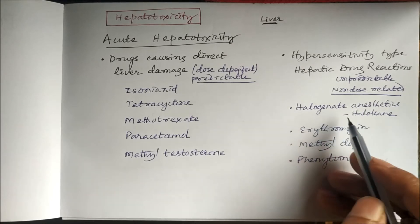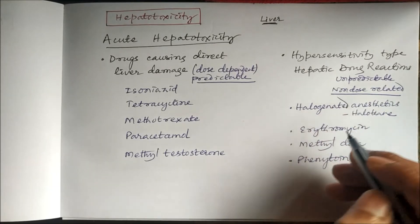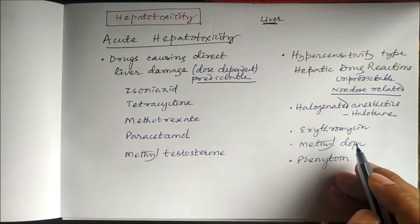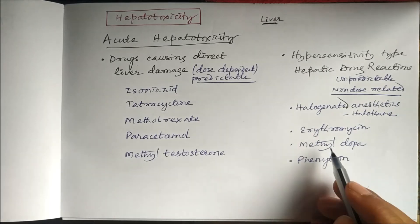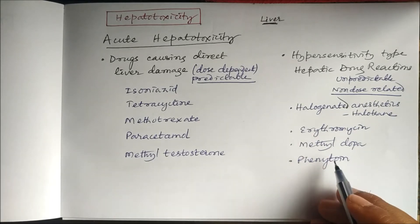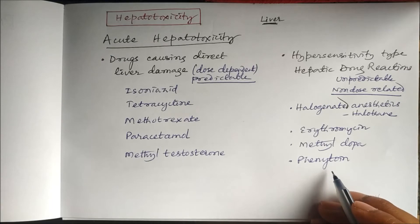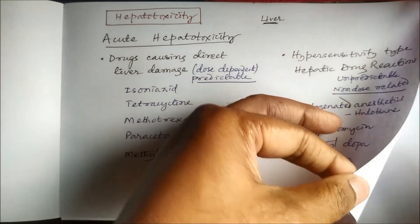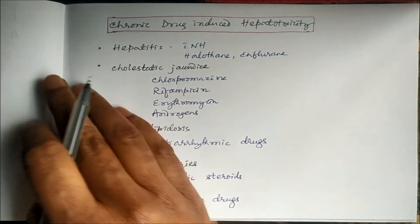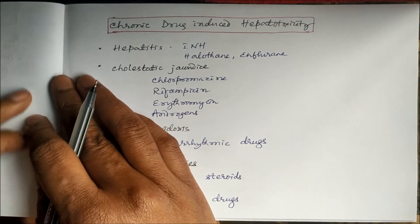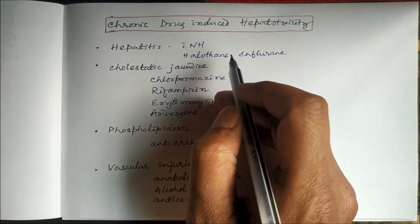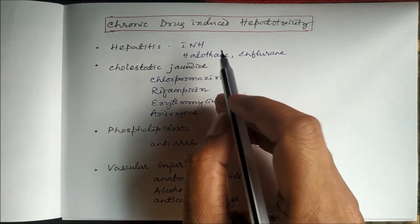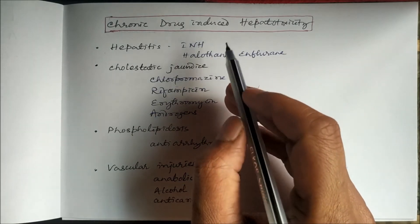Drugs which can produce hypersensitivity type hepatic reactions include halogenated anesthetics like halothane and enflurane, erythromycin, methyldopa, and the anti-epileptic drug phenytoin.